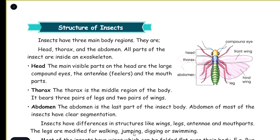The main visible parts on the head are the large compound eyes, the antennae — that is feelers — and the mouth parts.